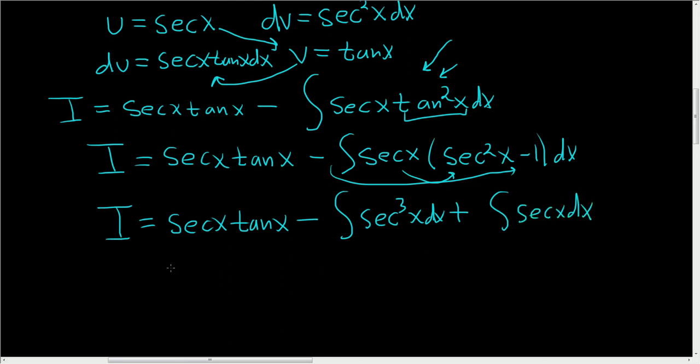Right, so we get i equals secant x tangent x minus. Well what's this? This is i. Right, remember i is our original integral which is secant cubed x dx. So it showed up again.